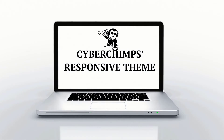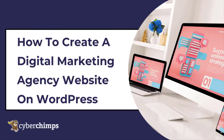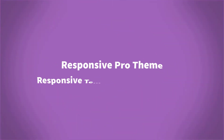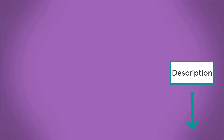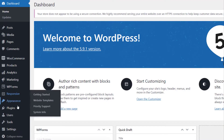In this video, we'll walk you through the steps of easily launching your digital marketing agency website with the responsive theme. The first and foremost thing you need to do is install and activate the Responsive Pro theme and the Responsive Template Importer plugin. You can find the download link in the description box below.